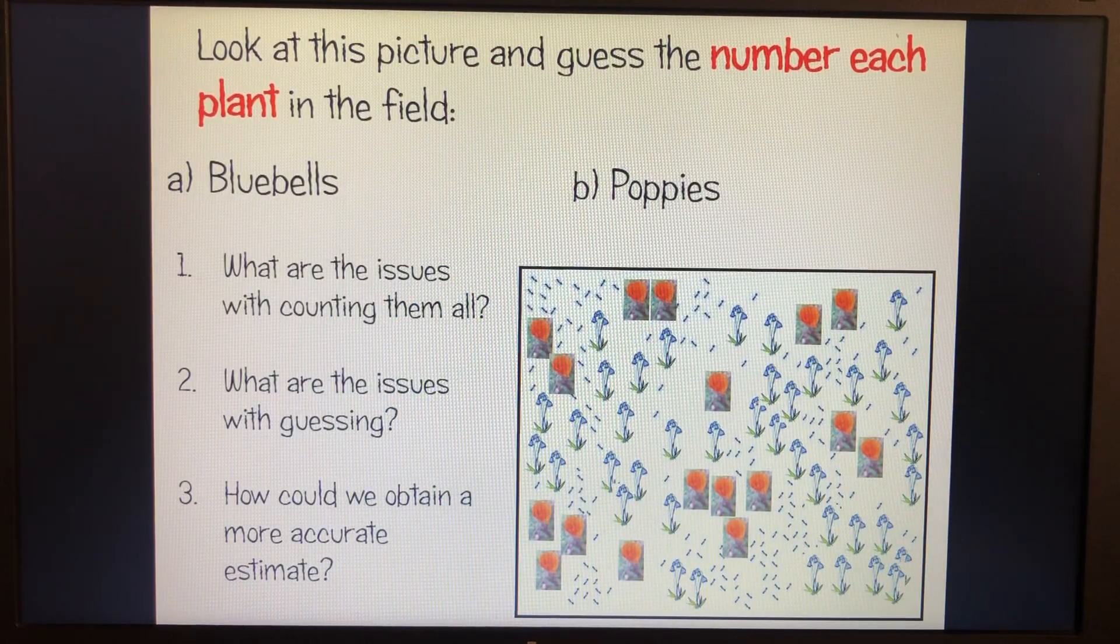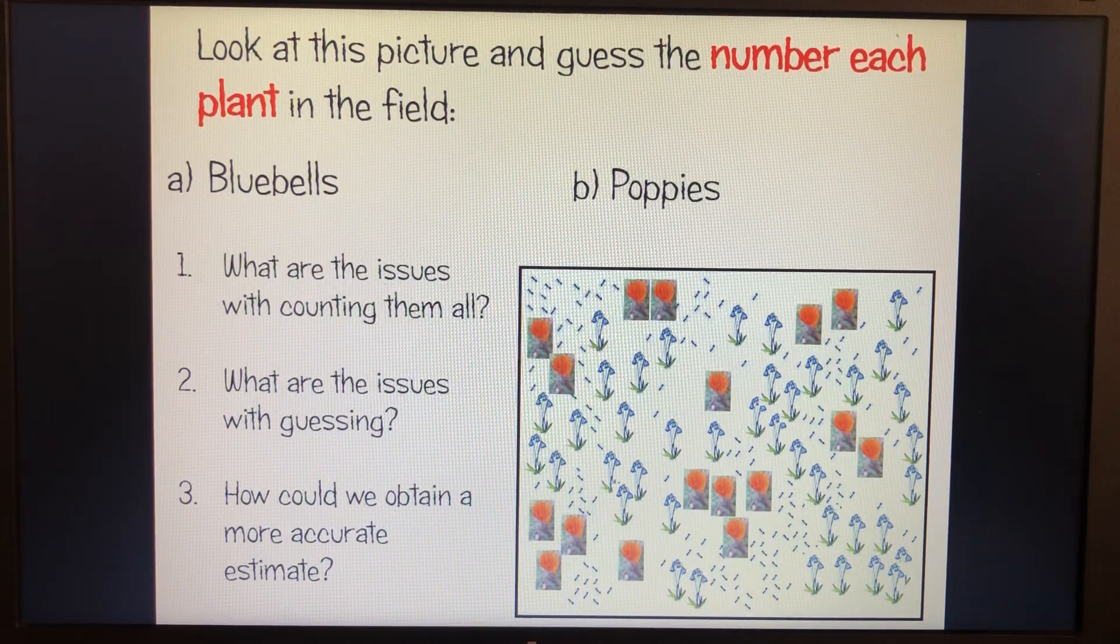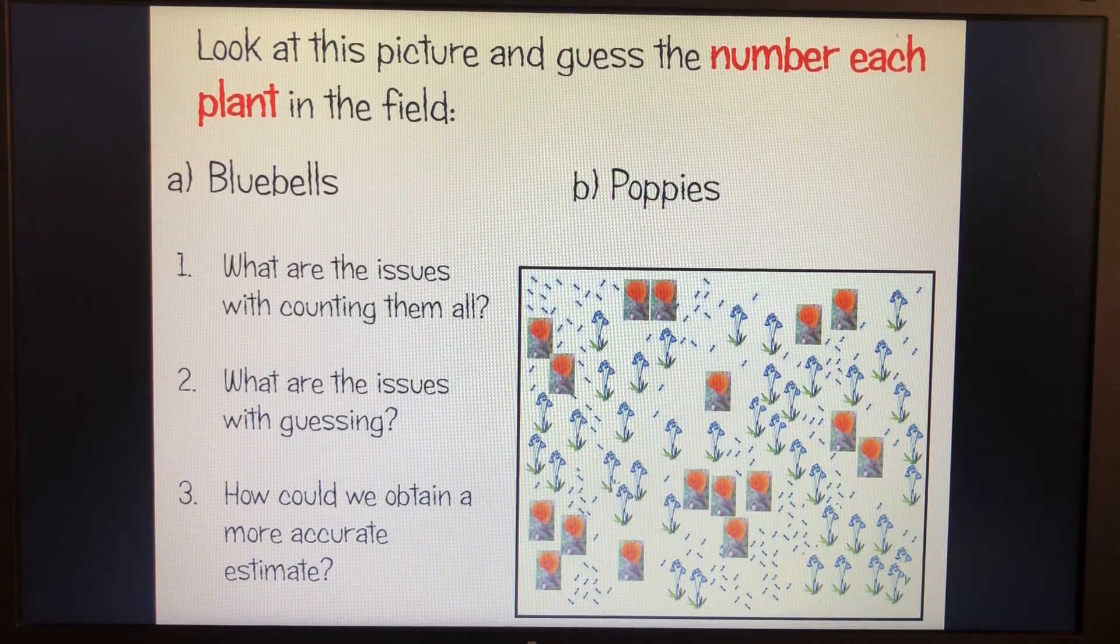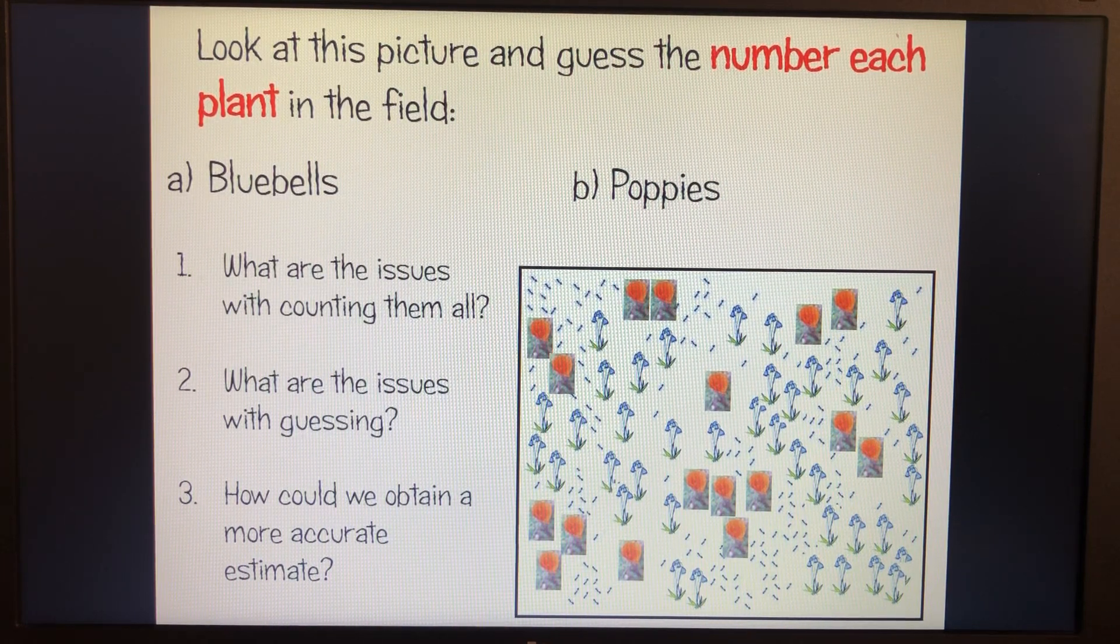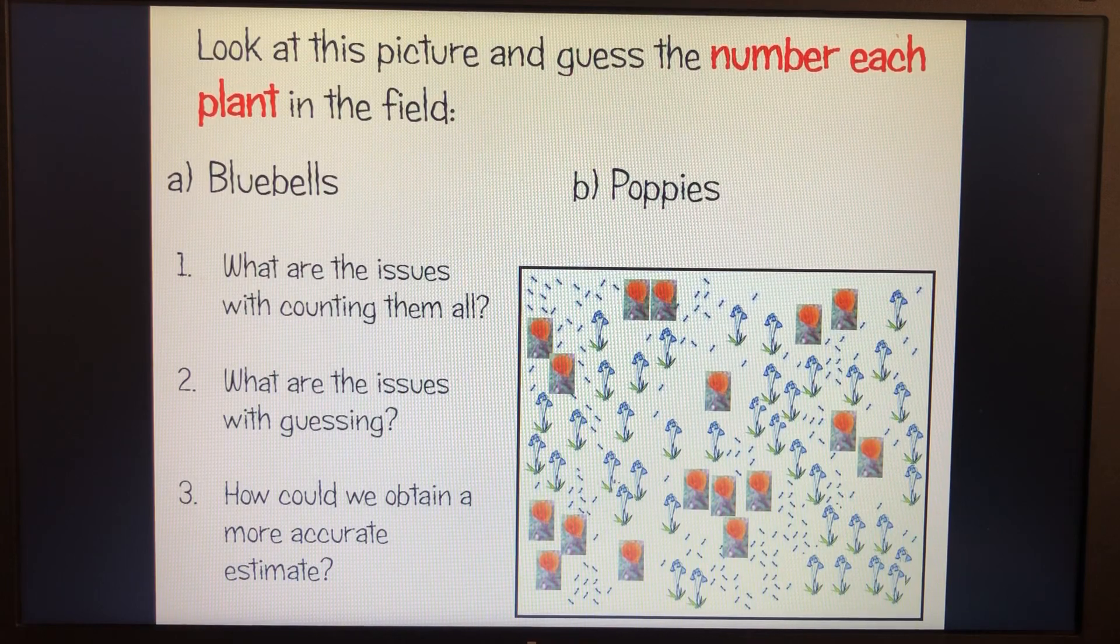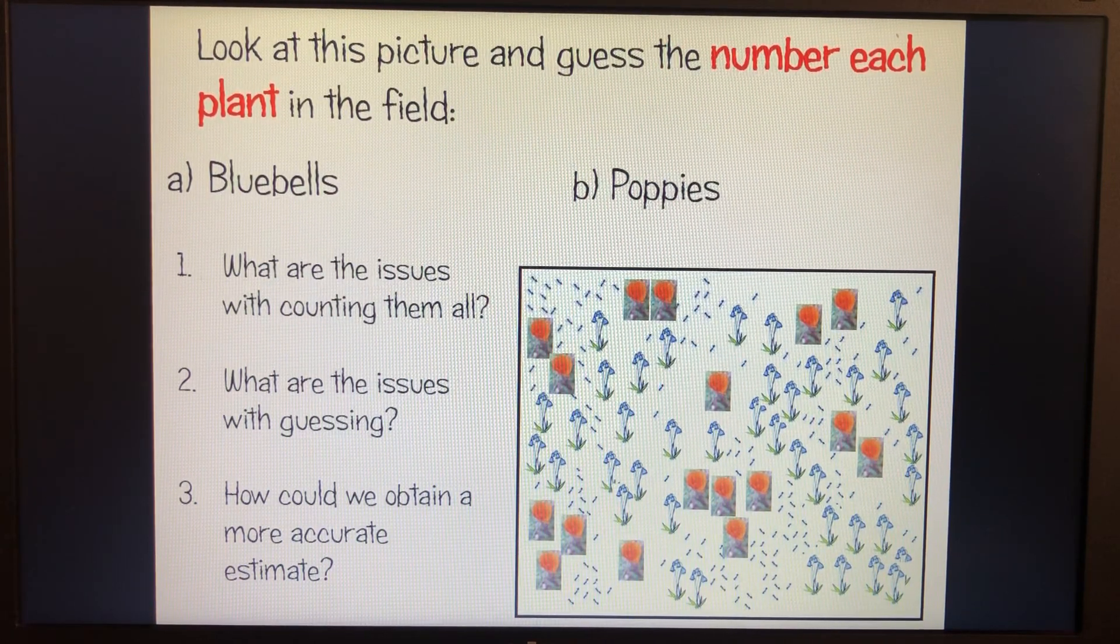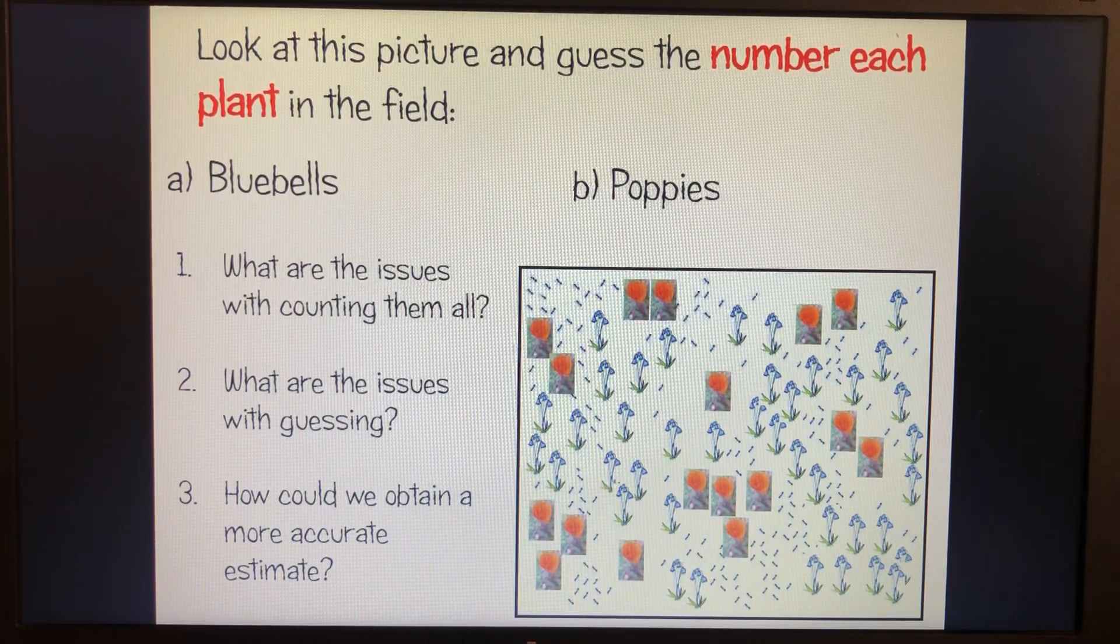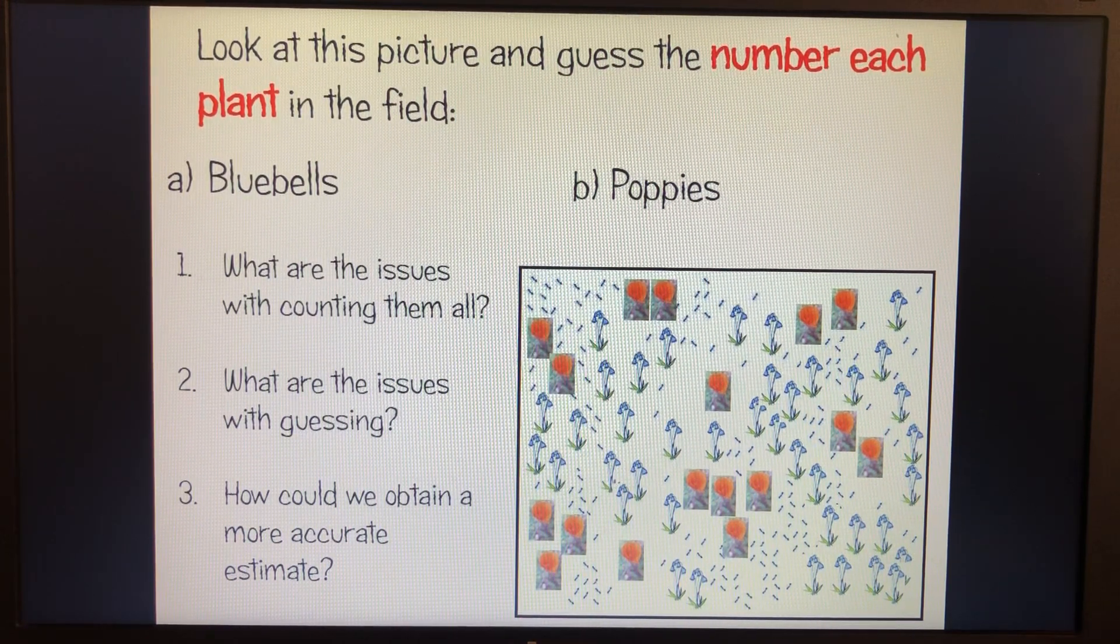So if we have a look at this slide here, and we guess the number of each plant in the field, probably lots of you now are going to pause it and you're going to have a little count of each of the things. And those tiny things that are scattered all over the place, they're actually ants. And we've got bluebells and we've got poppies. Now it's quite easy to count the poppies because they're kind of less of them, they're quite bright, they're easy to identify.